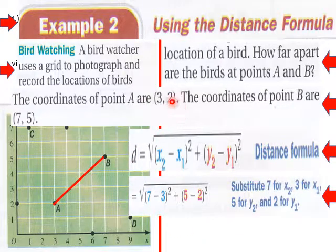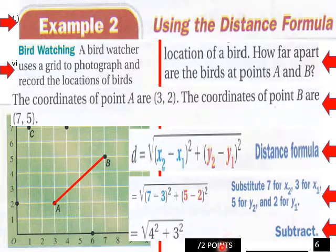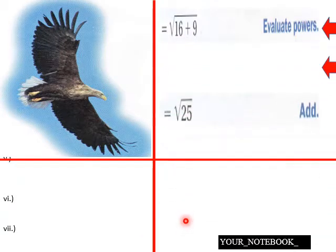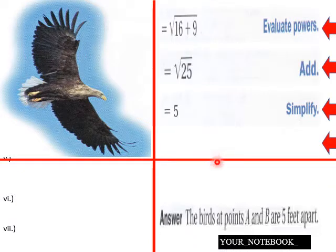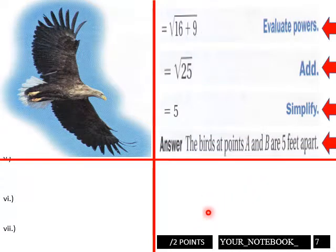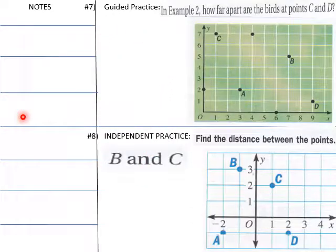We have 7 minus 3 and 5 minus 2. We square those differences and get 4 squared plus 3 squared, which equals the square root of 25, which is 5. So the distance between A and B is 5 feet. That's an example of using your distance formula.